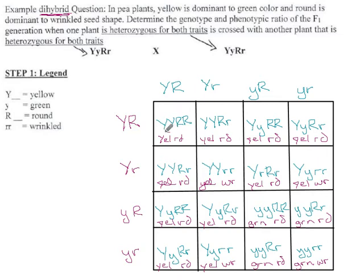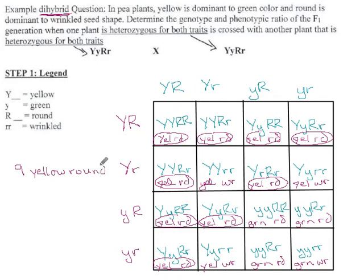Okay, so how many different combinations have we got? Yellow and round happens 1, 2, 3, 4, 5, 6, 7, 8, 9. Nine out of the sixteen offspring that are yellow and round. I'll put 9 out of 16. Often we just write 9, but 9 sixteenths is how often that happens.